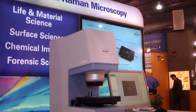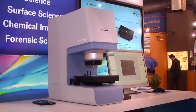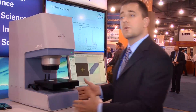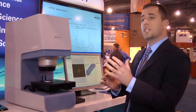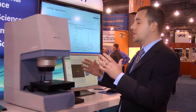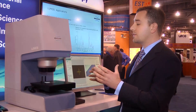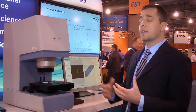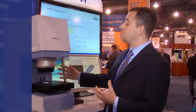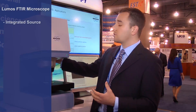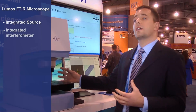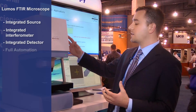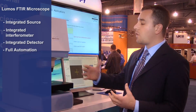The system is a completely self-contained unit. As you can see, there are no knobs, no devices to change any apertures, change objectives, or anything like that. It's a completely standalone system, so you have an integrated source, integrated interferometer, integrated detector, and full automation.